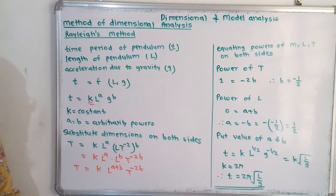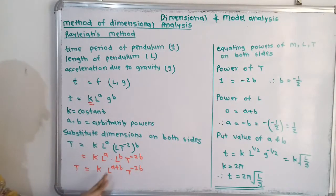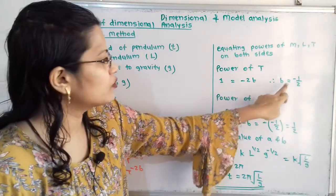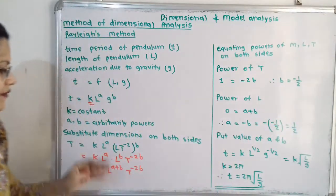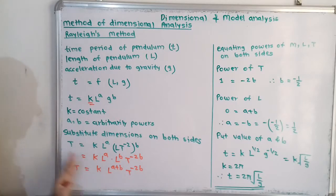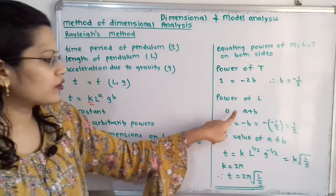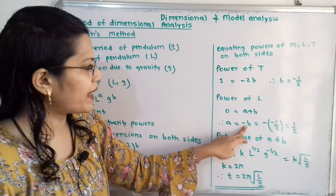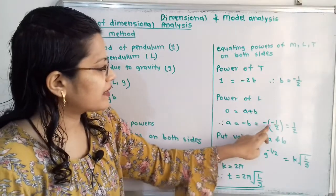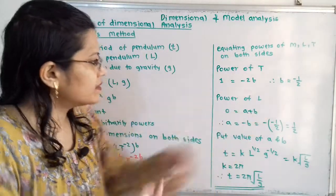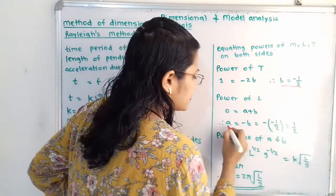Since M is not present, we first equate powers of T. On the left-hand side the power of T is 1, and on the right-hand side it is minus 2B. So 1 = minus 2B, giving B = minus half. Now equating powers of L: on the left-hand side there is no L so it is 0, and on the right-hand side it is A plus B. So 0 = A plus B, meaning A = minus B = minus of minus half = half.